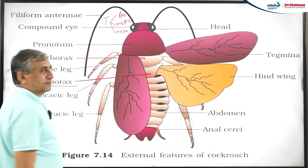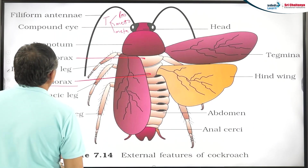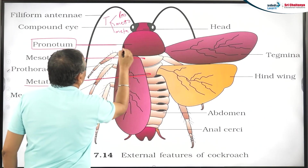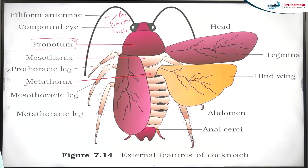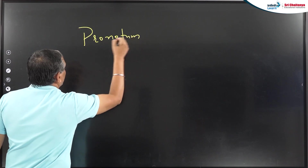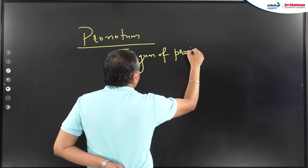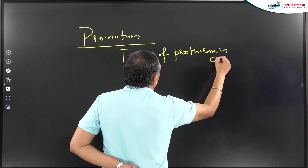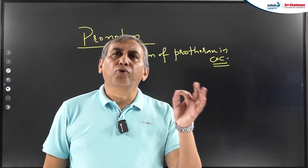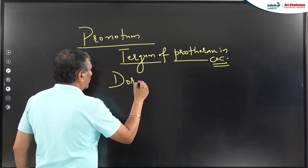The prothorax is not separately labeled in the diagram. Instead, one labeling in the part of prothorax is given — that is known as the pronotum. The pronotum is the tergum of the prothorax. In cockroach, the tergum of the prothorax is known as the pronotum. Tergum is the dorsal sclerite.